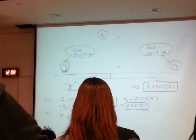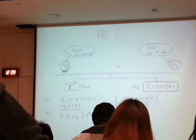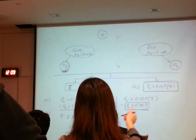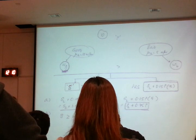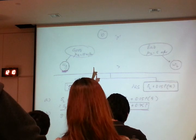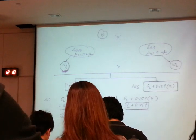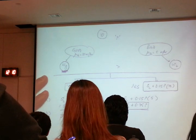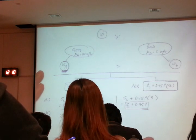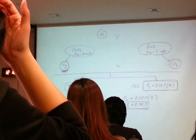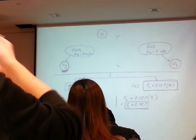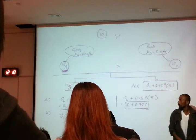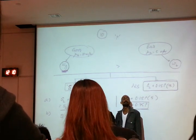Suppose the employer pays this minimum WG. How many good quality workers will he hire? He needs 10 employees, and there are equal numbers of good and bad workers in the population. The question is: at this wage, is there a separating equilibrium or a pooling equilibrium? In other words, will only good quality workers apply, or will bad quality workers also apply?